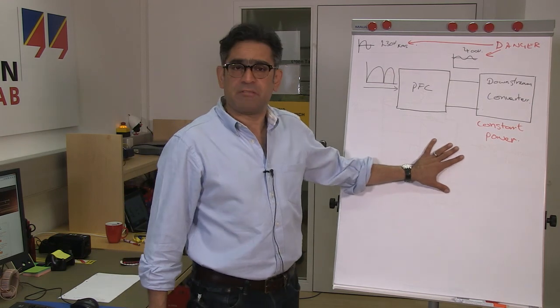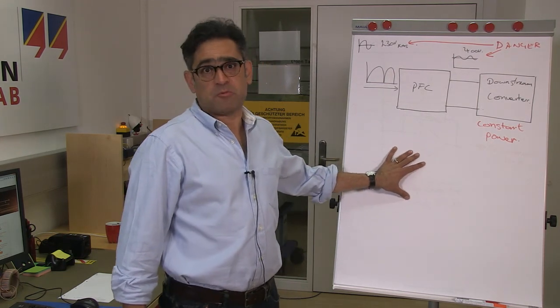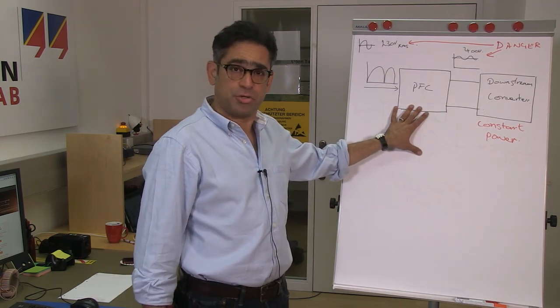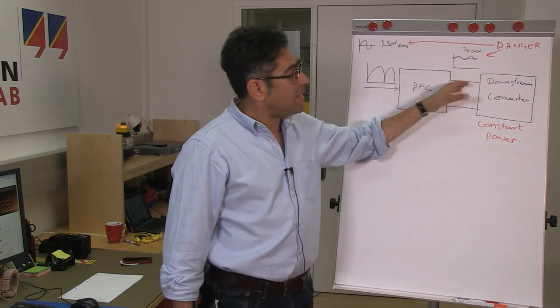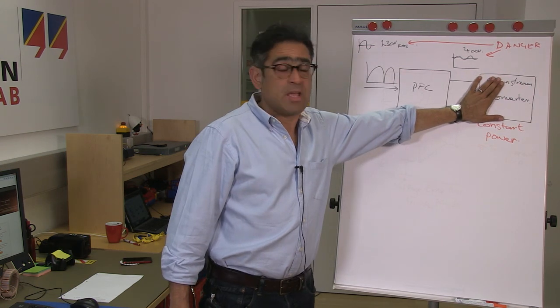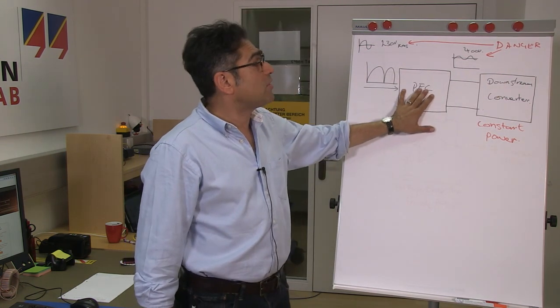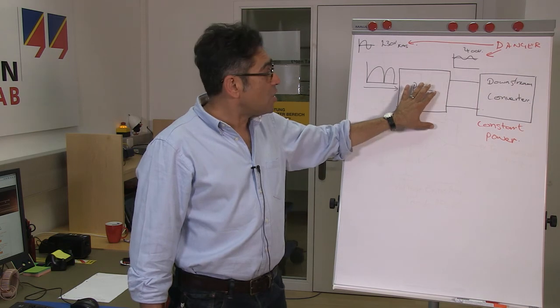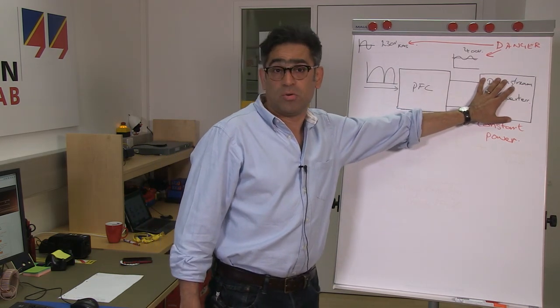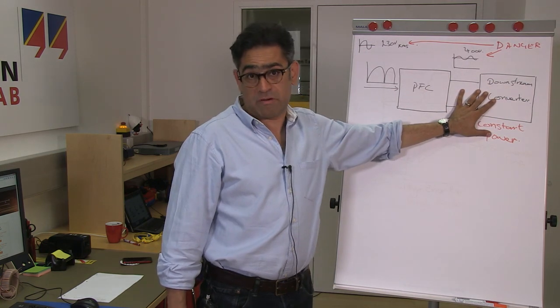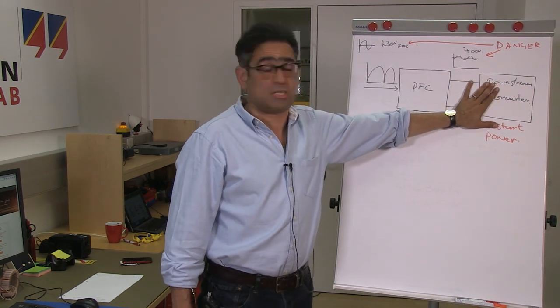Now for many appliances due to regulations, we must have a power factor correction unit, that's the PFC, which always feeds a downstream converter or second stage converter. Please note that when you try to measure the loop, you must always make sure that you have a constant power load, otherwise you will not get the correct result. A purely resistive load may not give you the correct result.